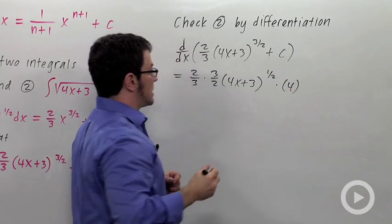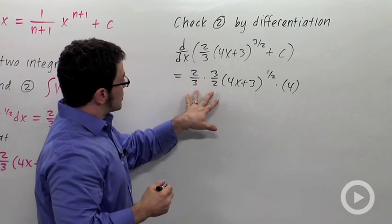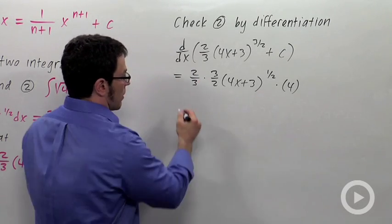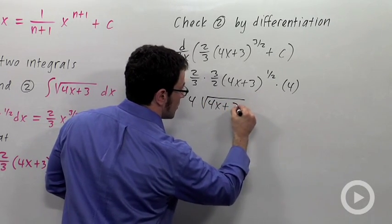And of course, the derivative of the plus c is 0. Now, when I look at this, I get 2 thirds times 3 halves. This is just 1. But then I have a 4 here. 4 times the square root of 4x plus 3.